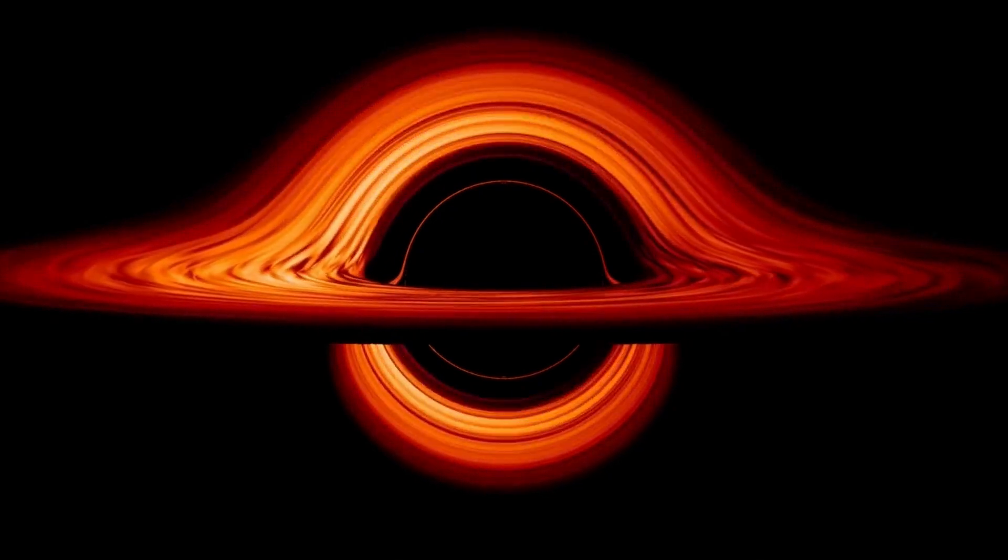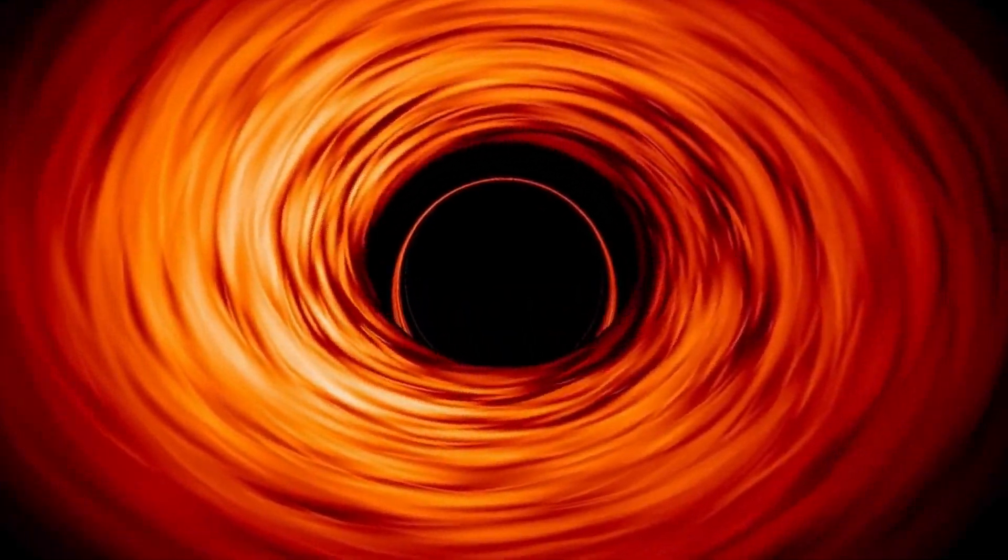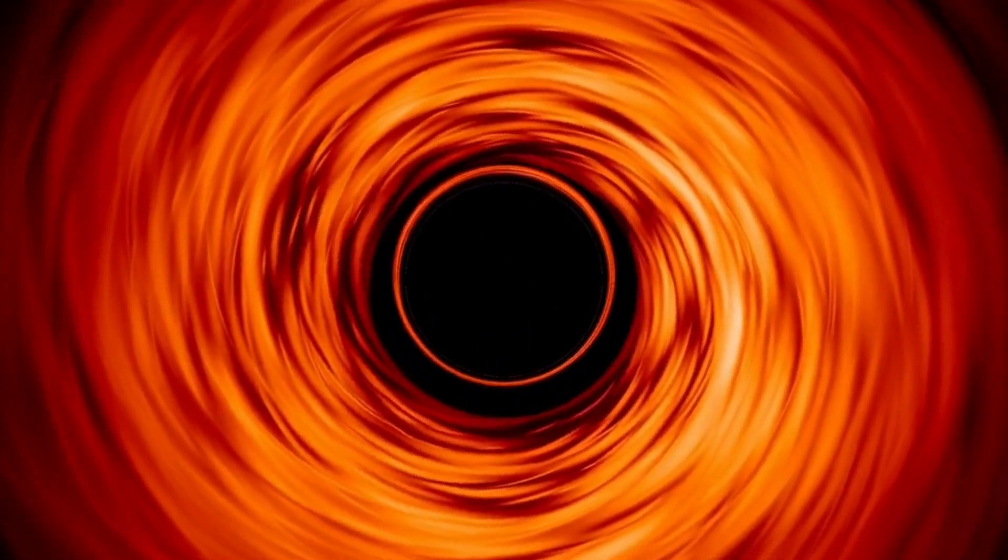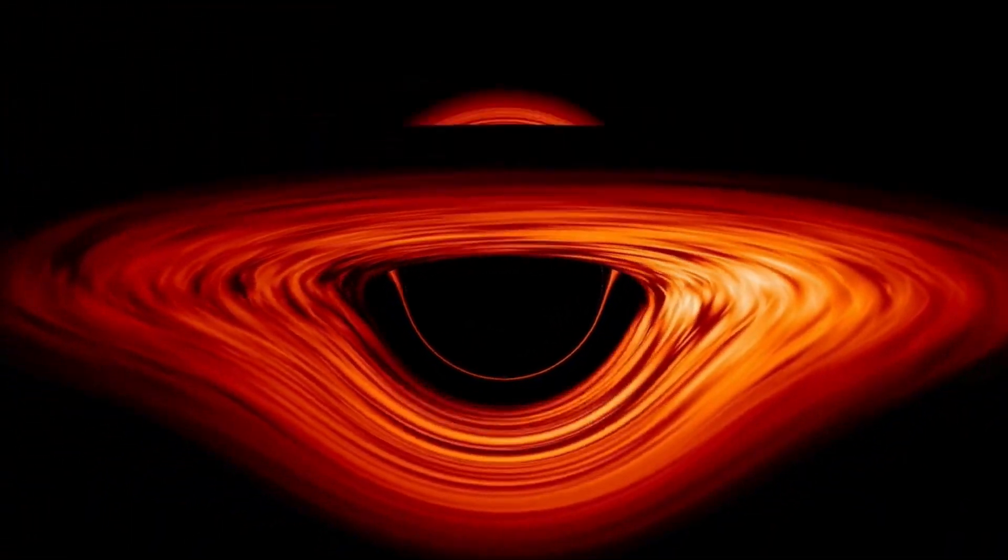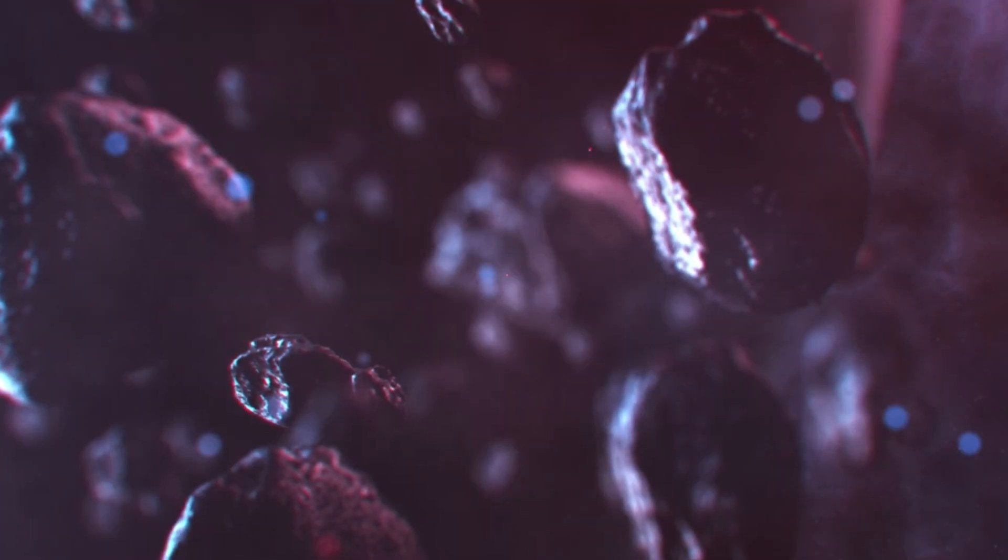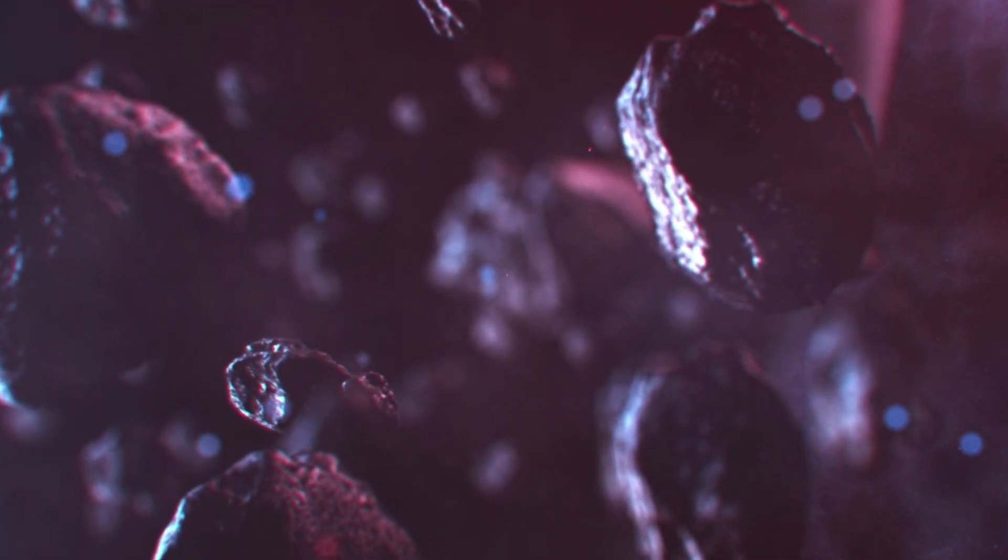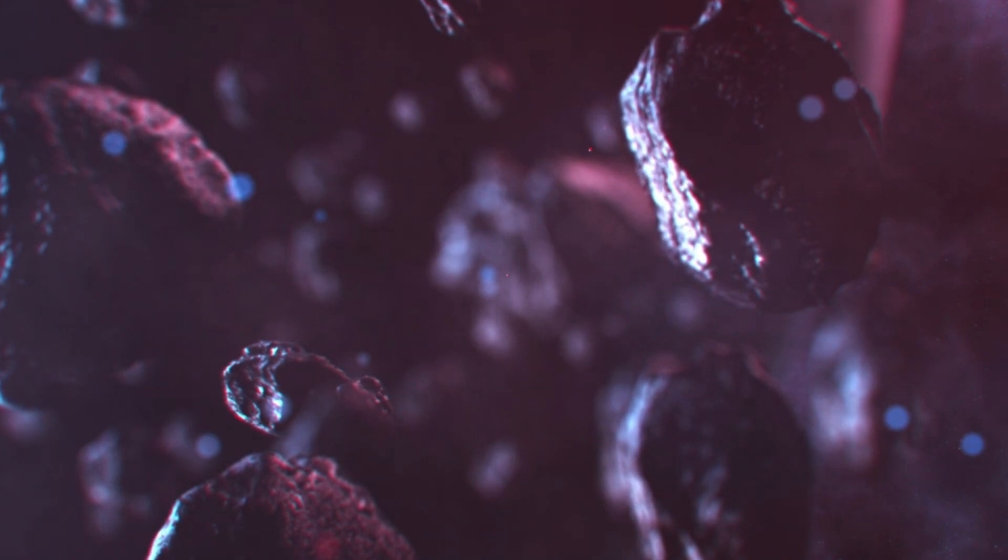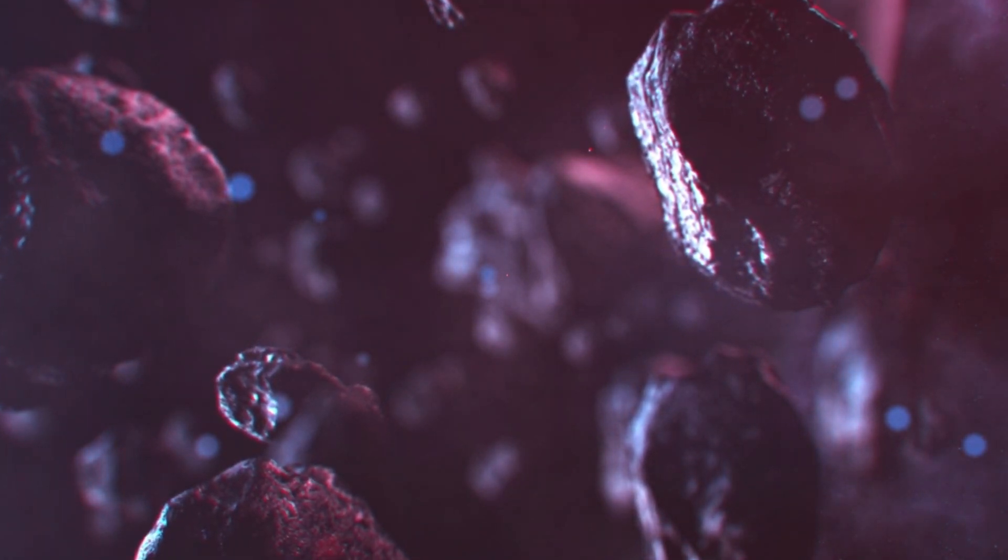While planetary features typically follow predictable patterns based on their composition, stellar environment, and geological history, the cone structure on Proxima b tears up the physics textbook entirely. We're witnessing three distinct properties that directly challenge our fundamental understanding of how rocky worlds should behave.